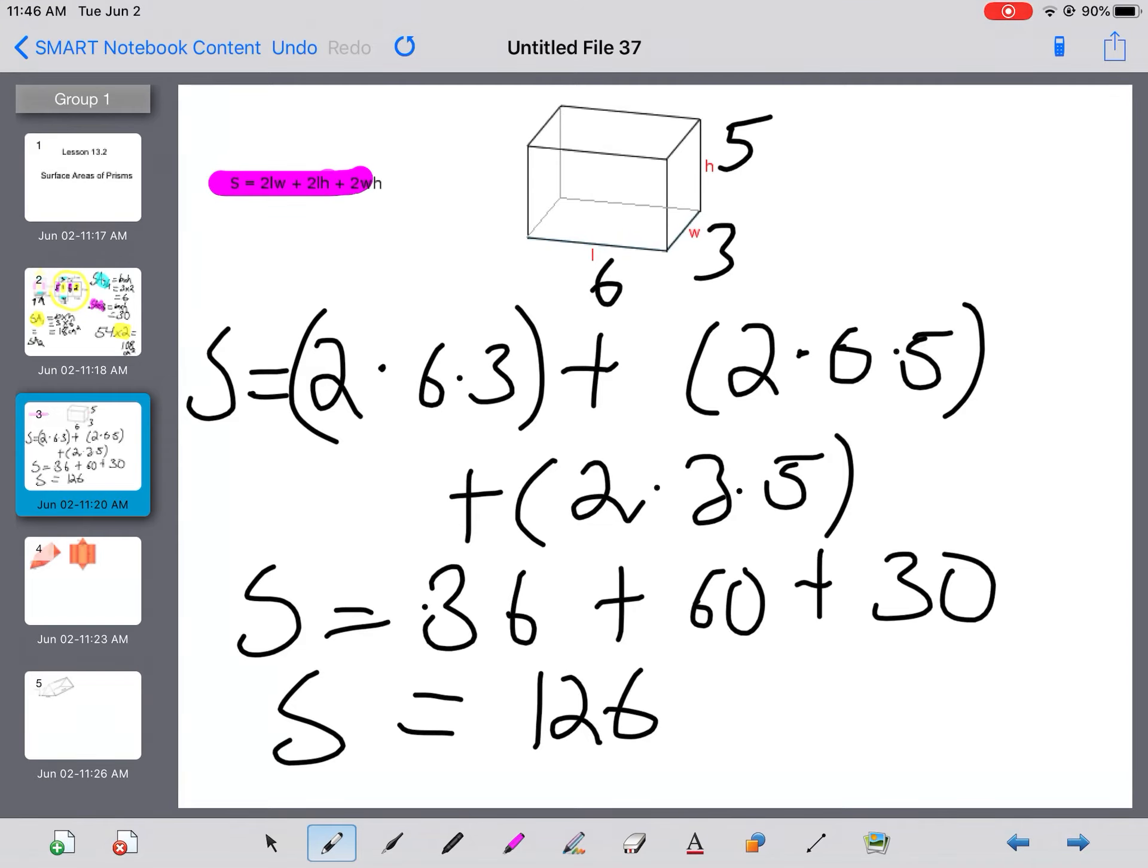If you want, you can use that formula. But really another way to think of it is I need to have five times three two times, six times three two times, and six times five two times, because that will get me all six faces of my rectangular prism.